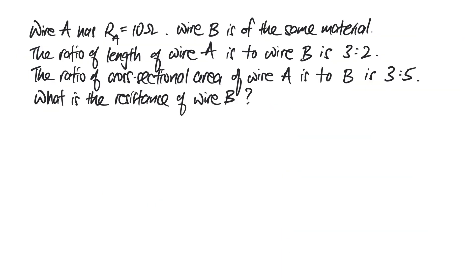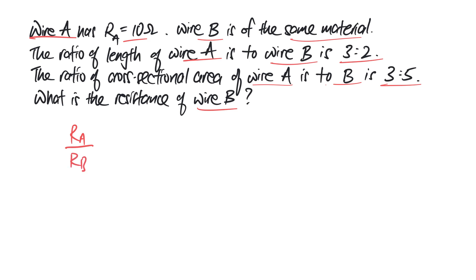In this last example, you are given wire A of resistance 10 ohms, and wire B of the same material so resistivity is the same. The ratio of length of wire A to wire B is 3 to 2, and the ratio of cross-sectional area of wire A to wire B is 3 to 5. You are required to find the resistance of wire B. Since the information given is in terms of ratios, it's better to express the resistance of A to resistance of B as a ratio. Since resistance is rho L over A, I take rho_A times L_A over area_A, divided by rho_B times L_B over area_B.